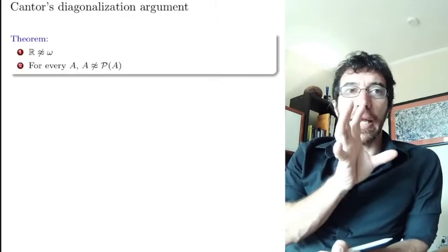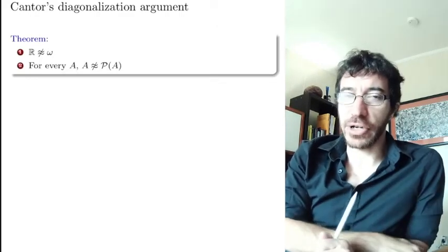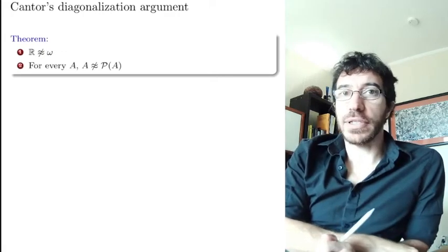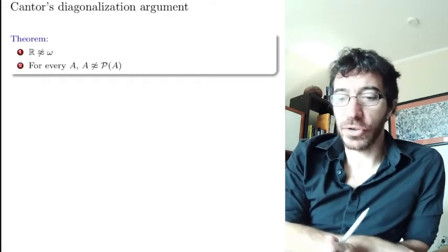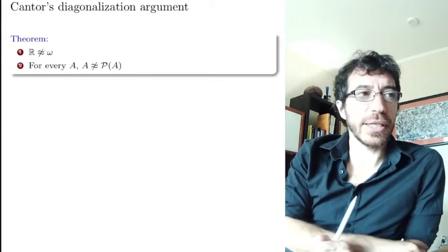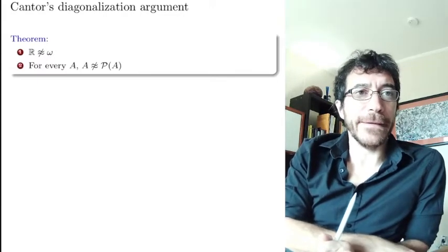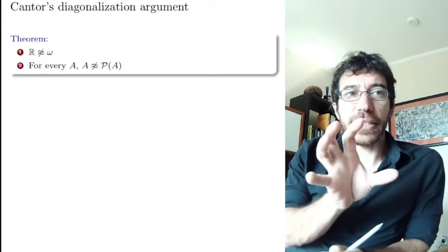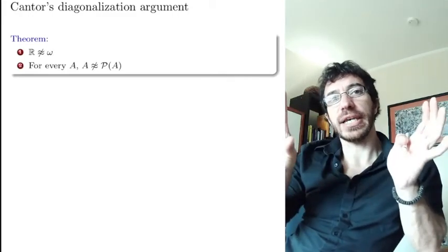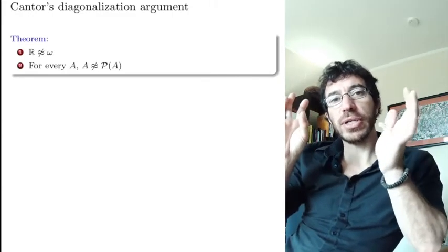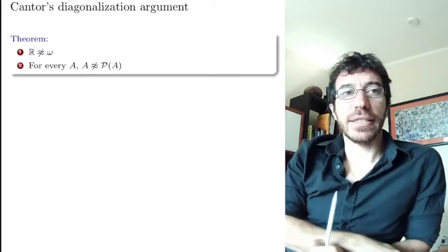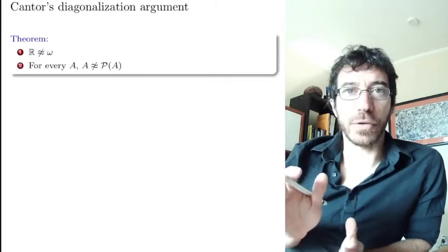Are those different? This is the very famous Cantor diagonal argument that he proved more than 130 years ago — that the reals and the integers and the natural numbers have different size. So there is no bijection between the reals and the natural numbers. Let's do these two proofs.